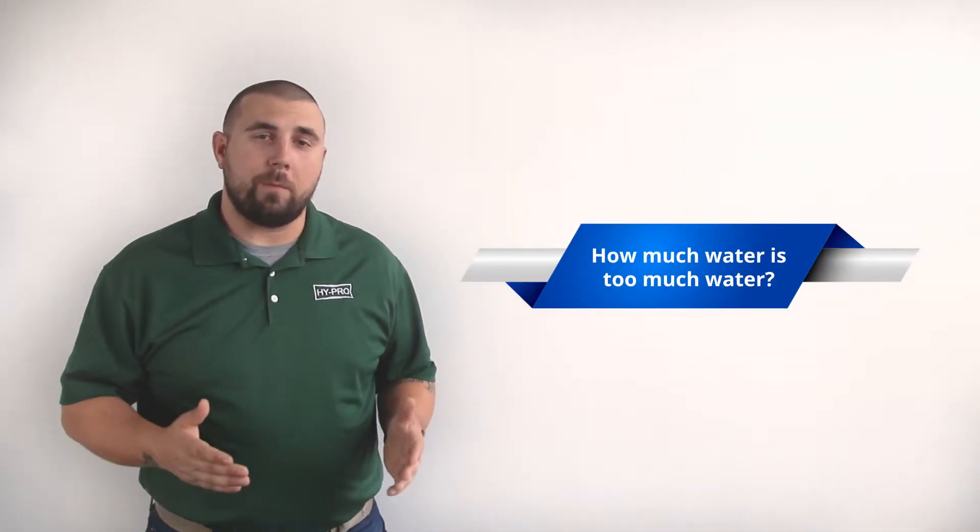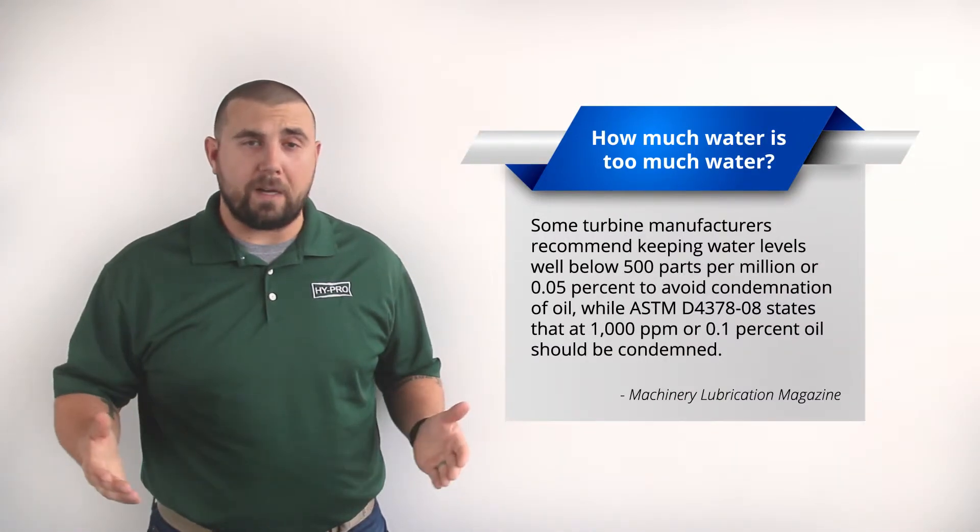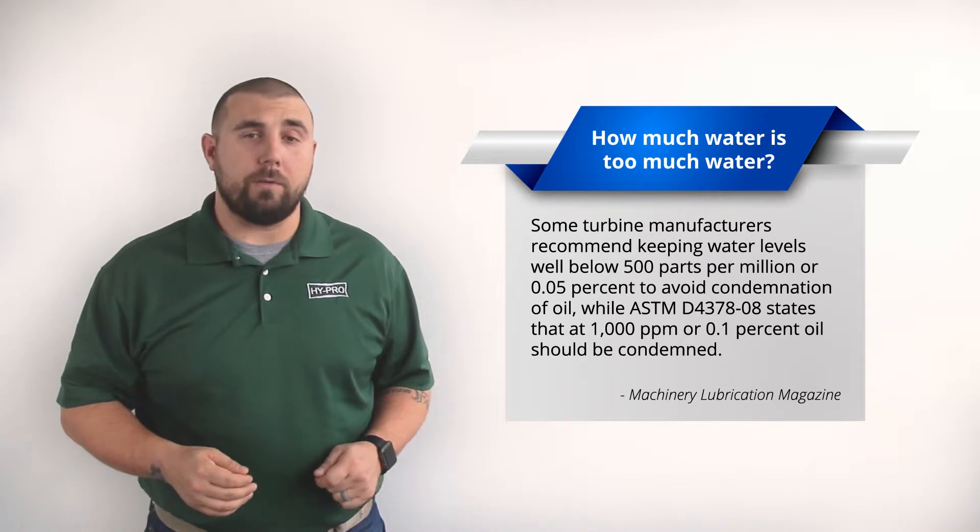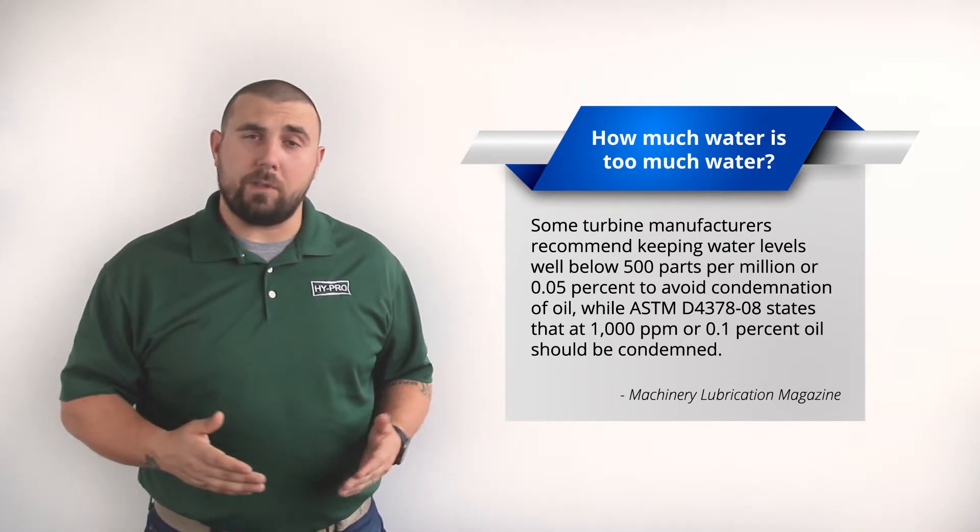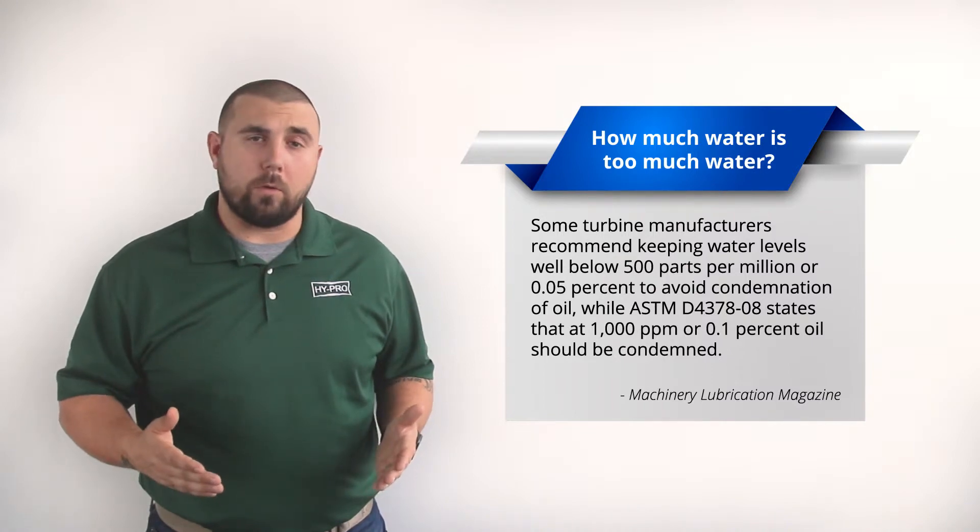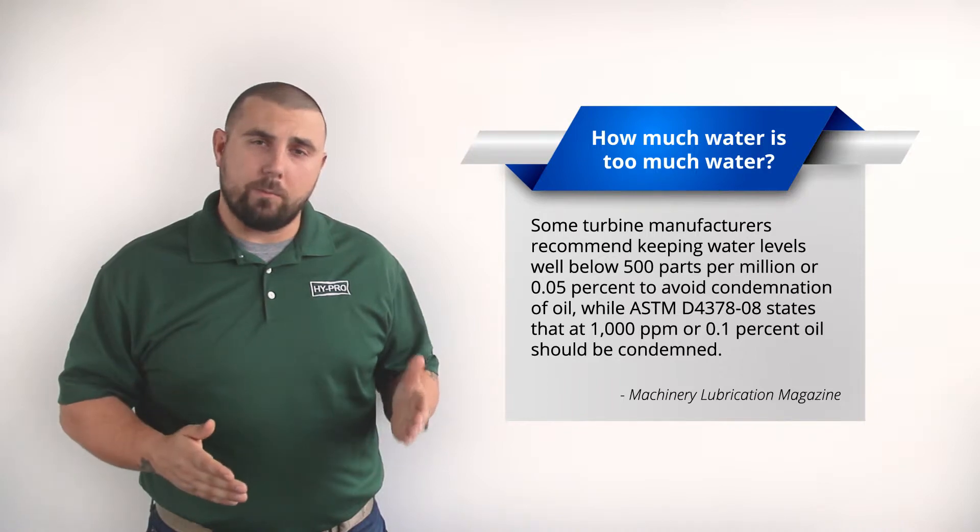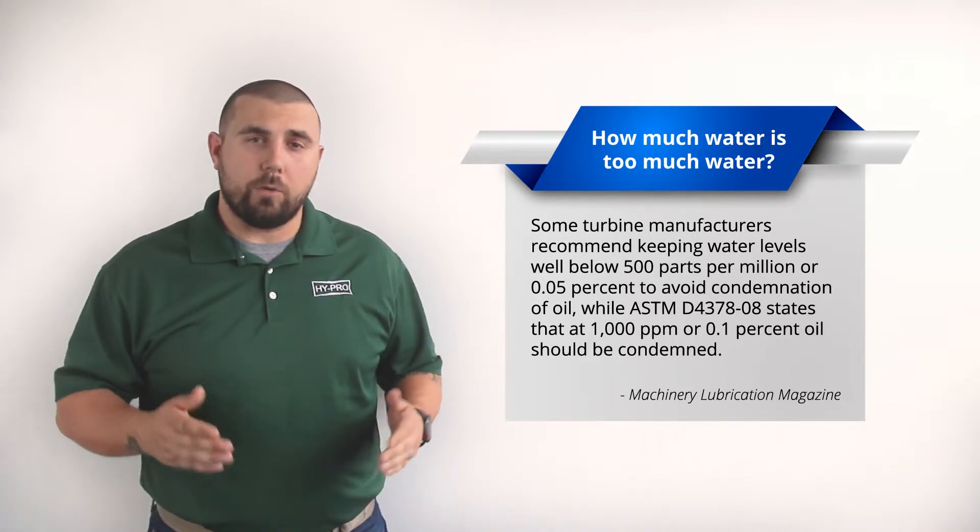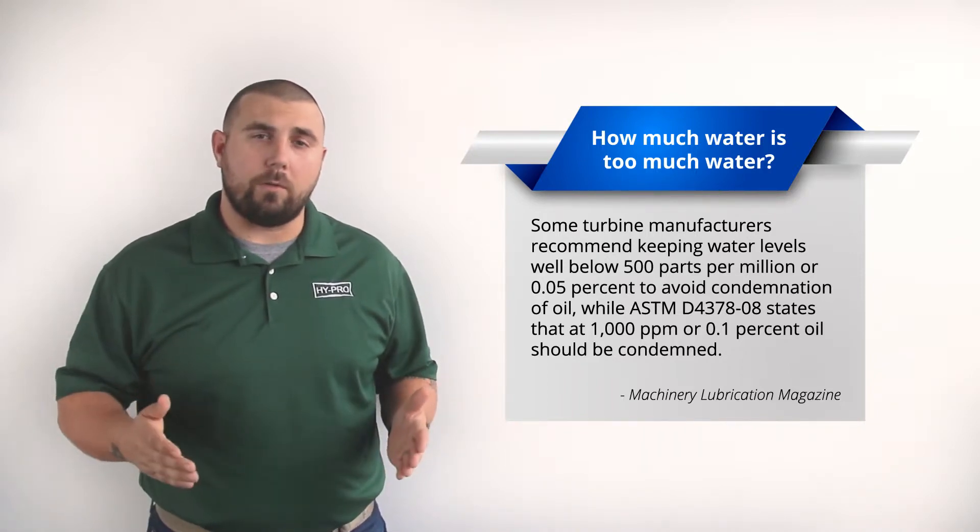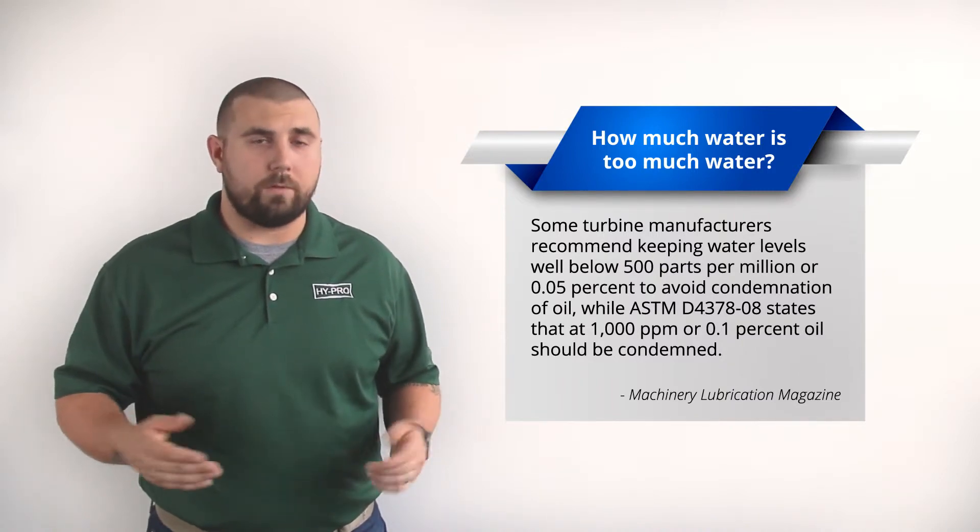Some turbine manufacturers recommend keeping water levels well below 500 parts per million, or 0.05%, to avoid condemnation of oil, while ASTM D4378-08 states that at 1,000 parts per million, or 0.1%, oil should be condemned. Because there is no absolute standard, it's important to monitor your oil. To ensure proper lubrication, the water level in the oil should be below saturation to avoid the presence of free and emulsified water.